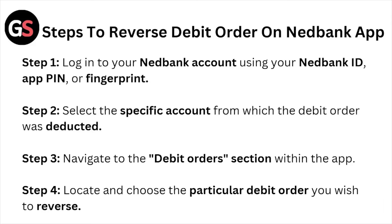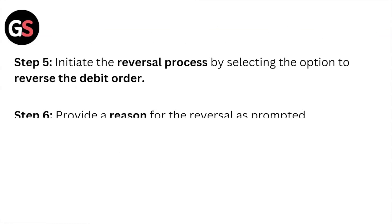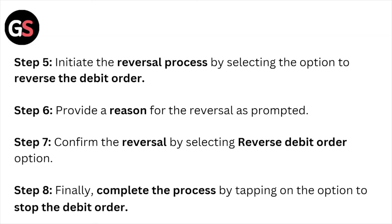Step number four: locate and choose the particular debit order you wish to reverse. Step number five: initiate the reversal process by selecting the option to reverse the debit order. Step number six: provide a reason for the reversal as prompted.